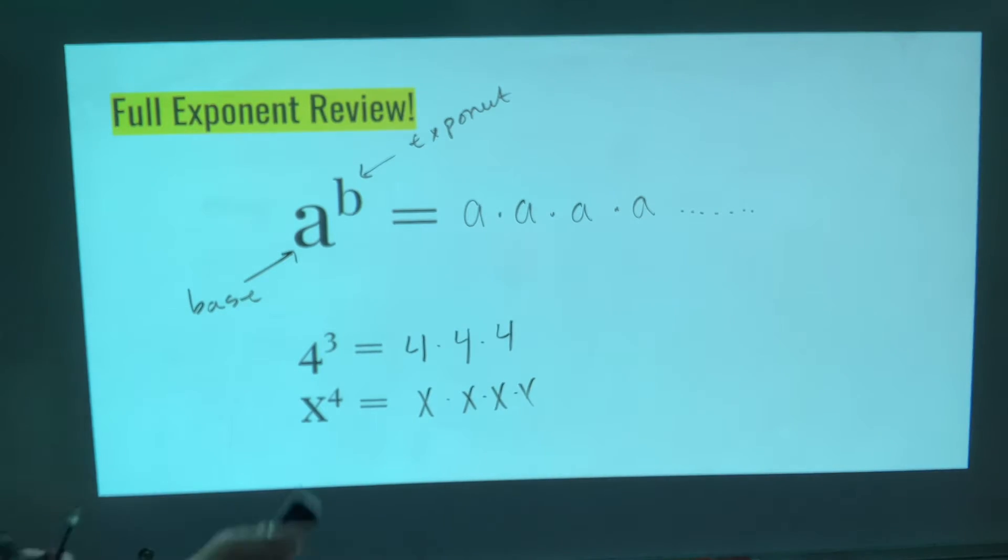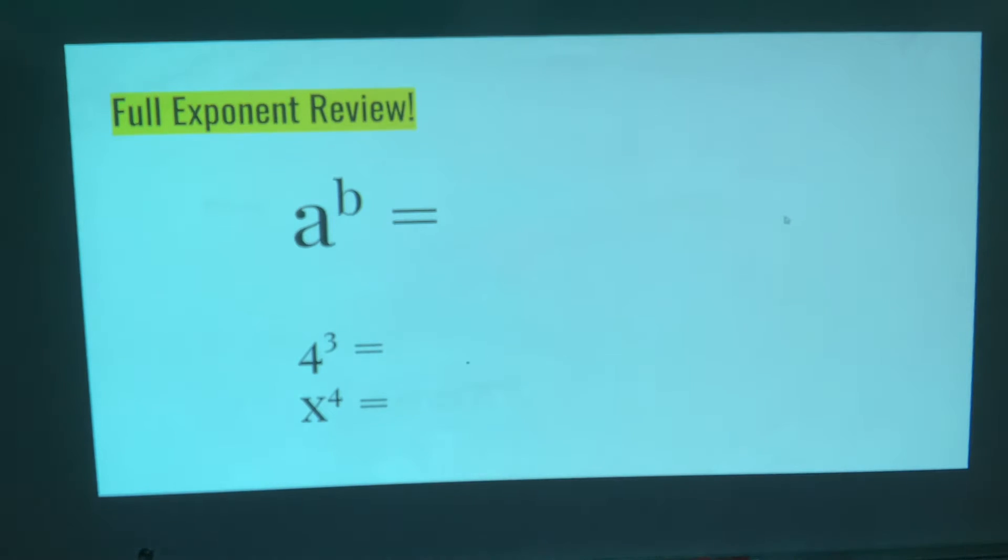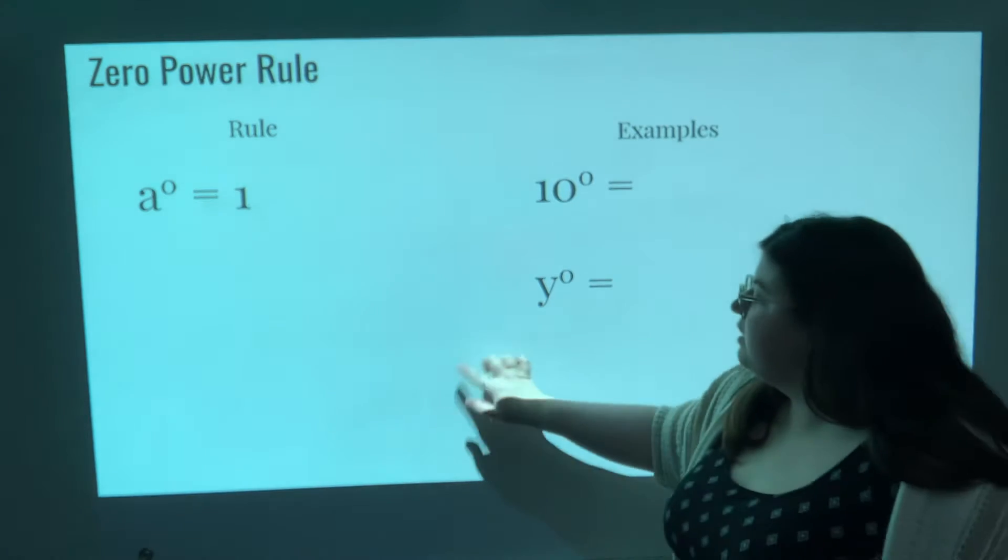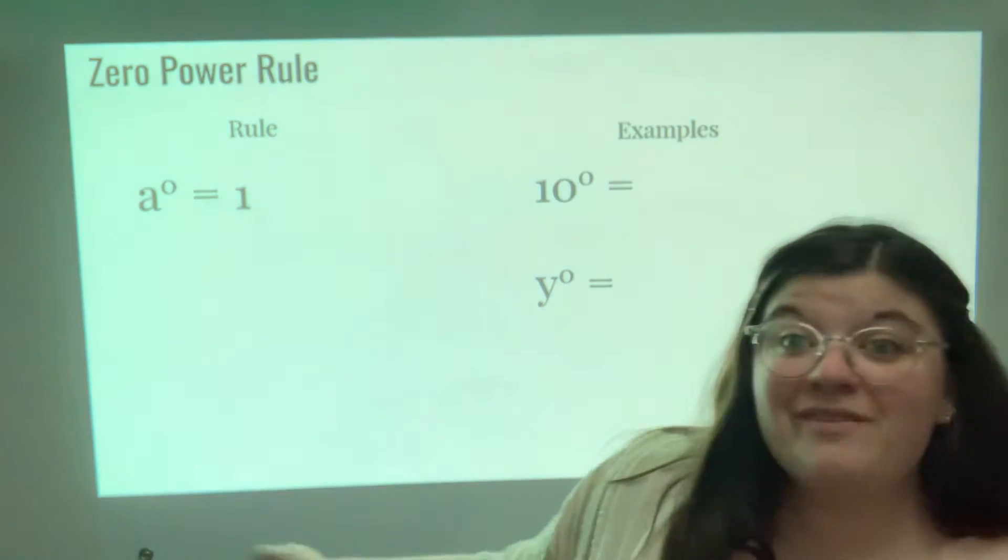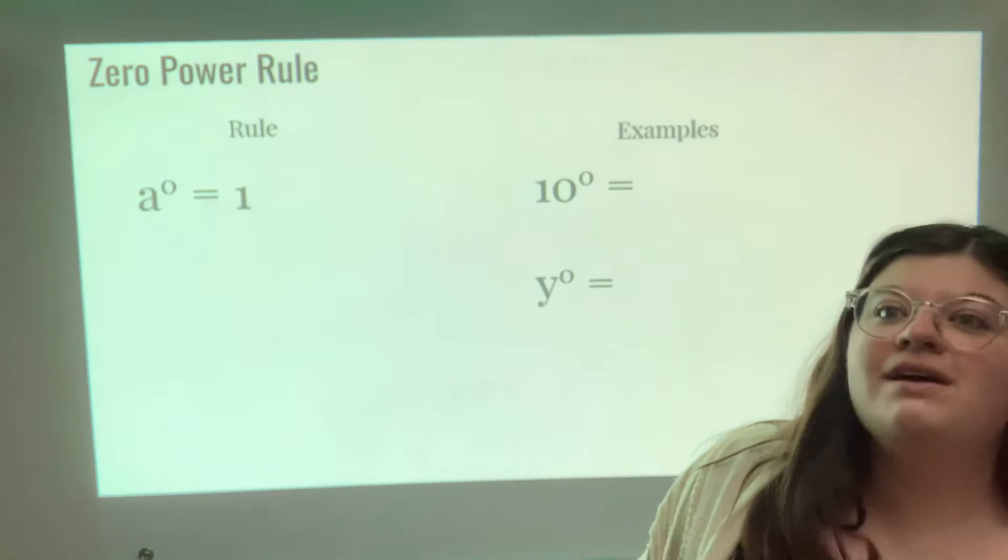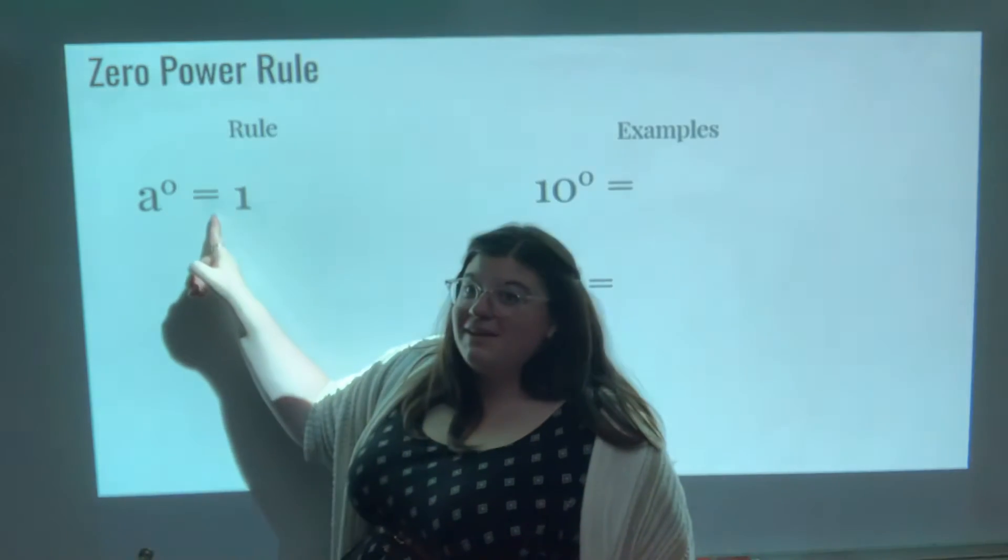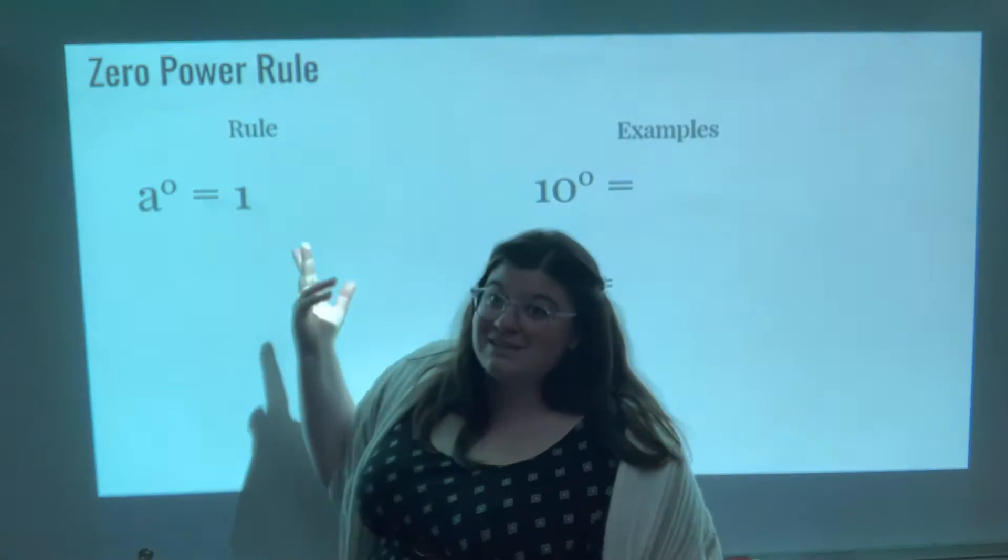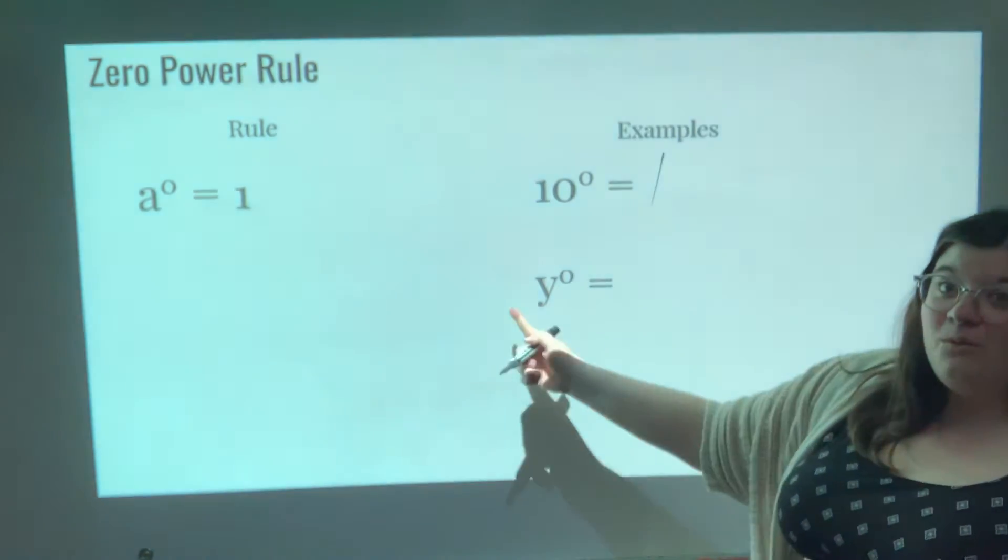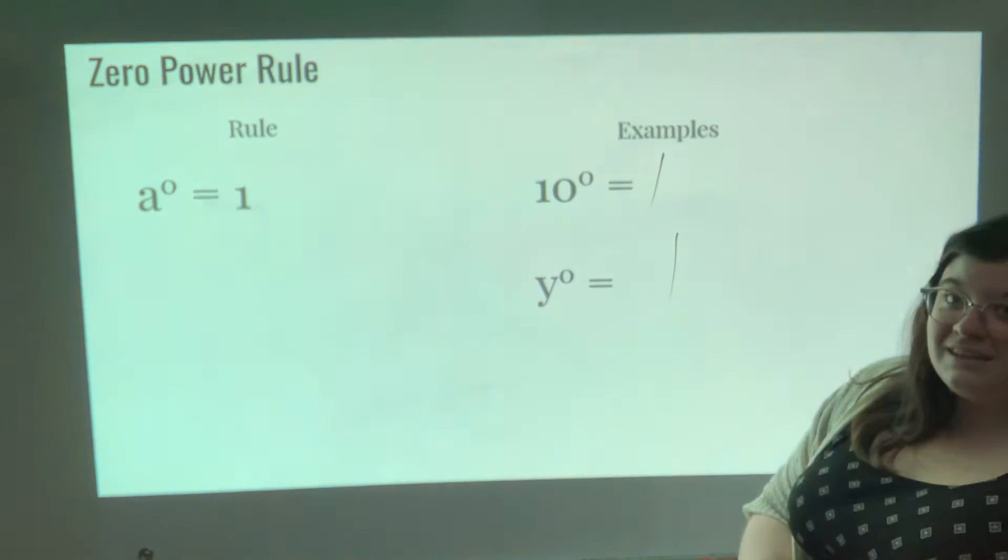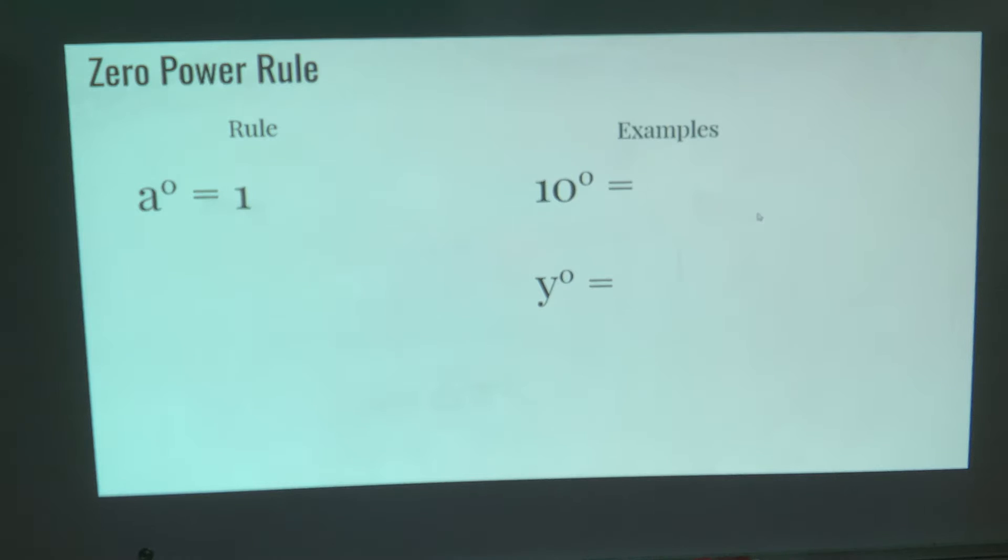Pause if you need to. Okay, let's look at some rules here. The first one we're going to talk about is the zero power rule. If you have anything to the power of zero, it's just 1. A to the zero power is equal to 1. That's easy. So 10 to the zero power is 1. Y to the zero power? Anything to the zero power is just 1. Pause if you need to. We're going to be going through these quick.